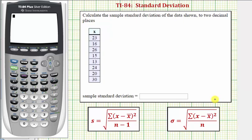Welcome to an example on how to use the one variable stats tool on the TI-84 to determine standard deviation. In this example we're asked to determine the sample standard deviation of the data shown to two decimal places. And it's just as easy to determine the population standard deviation using the TI-84.